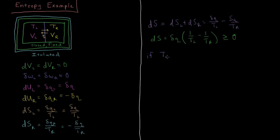What if TL is greater than TR? If TL is greater than TR, then 1 over a big number is small, minus 1 over a small number is big — so we have small minus big, which gives us a number less than zero. So the bracket (1/TL minus 1/TR) is negative.